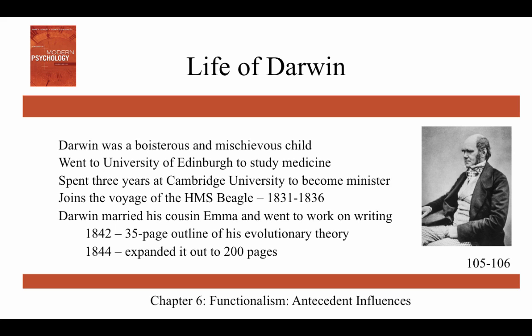Darwin was born in 1809 into a wealthy and socially prominent family. He was boisterous and mischievous as a child. He started at the University of Edinburgh to study medicine but found it dull, then spent three years at Cambridge University to become a minister — academically a waste of time in his view, but socially the best time of his life, spent drinking, singing, and playing cards. He joined the voyage of the HMS Beagle from 1831 to 1836 as the shipboard naturalist, and was almost rejected because the captain, Robert Fitzroy, didn't like the shape of his nose.